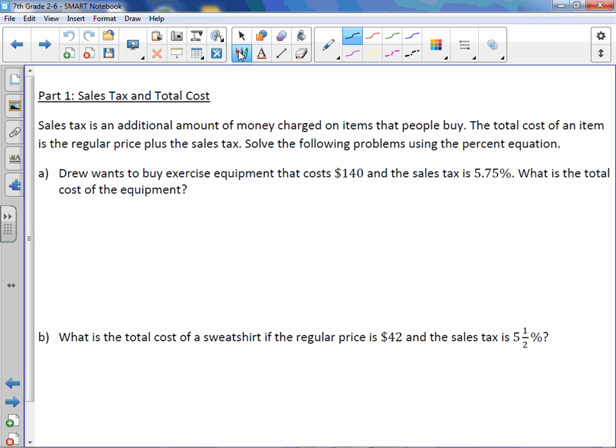Letter A. Drew wants to buy exercise equipment that costs $140 and the sales tax is 5.75%. What is the total cost of the equipment? So we are going to set up a proportion, 100 being the denominator, one of the denominators. Our percent goes above 100 always. It's okay that you have a decimal for now. The equipment costs $140, that is our whole amount, our regular price, and our variable up top.